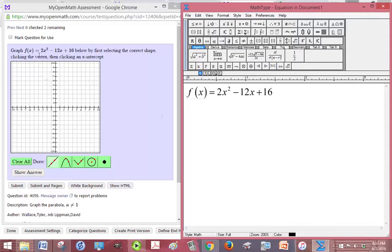All right, so we are trying to graph 2x squared minus 12x plus 16 in the graphing paper below. And we're supposed to pick the correct shape, click on the vertex, and then click an x-intercept.